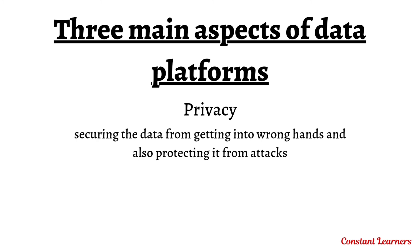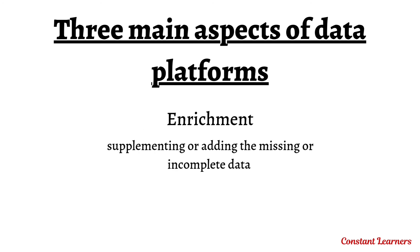Privacy is about securing the data from getting into the wrong hands and protecting it from attacks — someone may steal the data, modify it, or add completely new, unnecessary, or incorrect data. The third aspect is data enrichment, which is the process of enhancing existing information by supplementing or adding the missing or incomplete data — whatever incomplete data exists, we need to complete it.